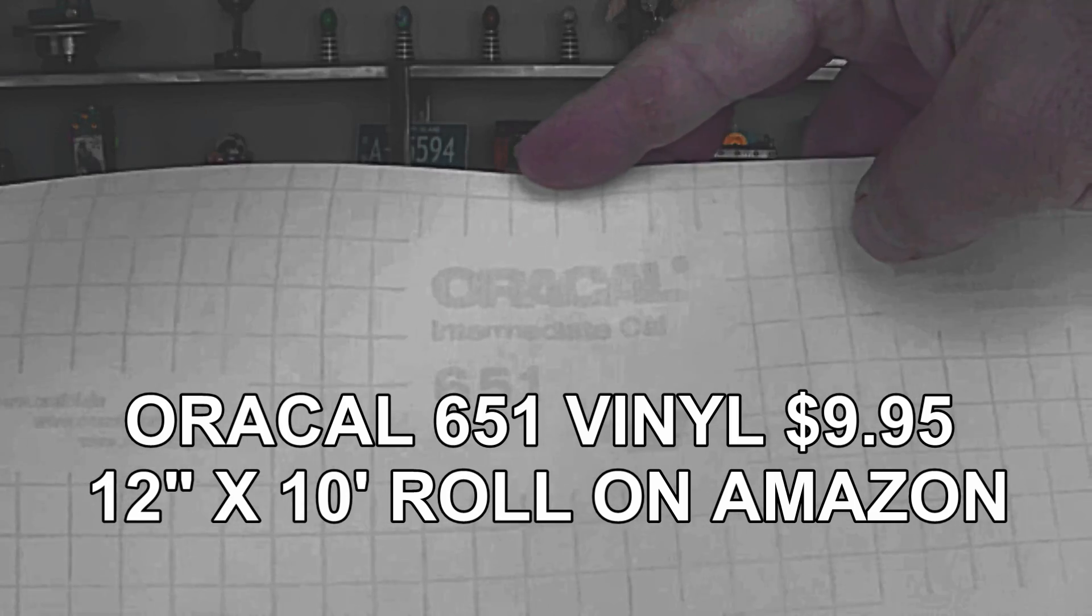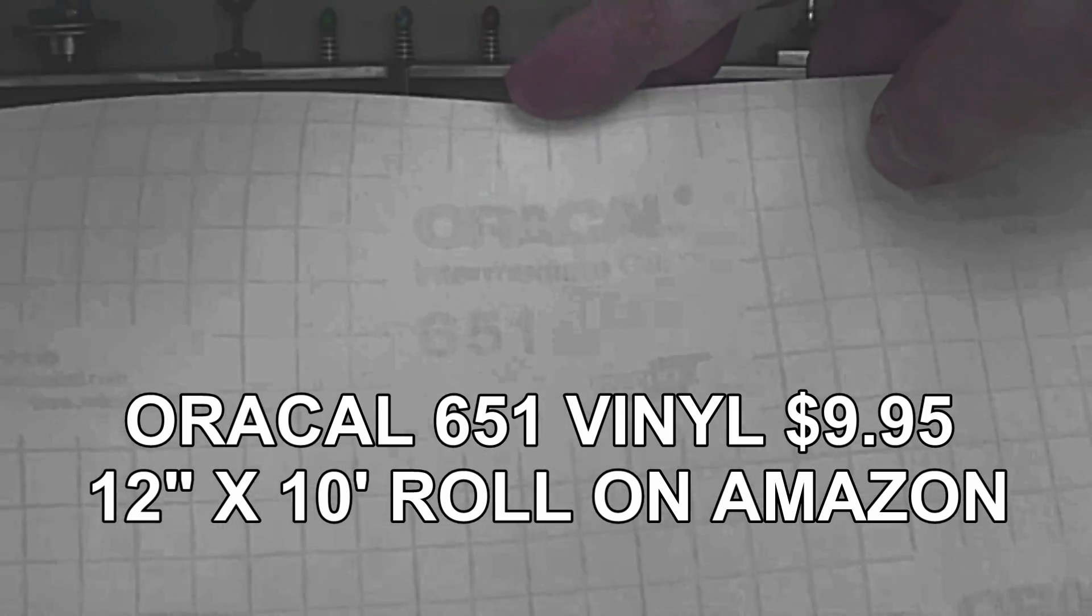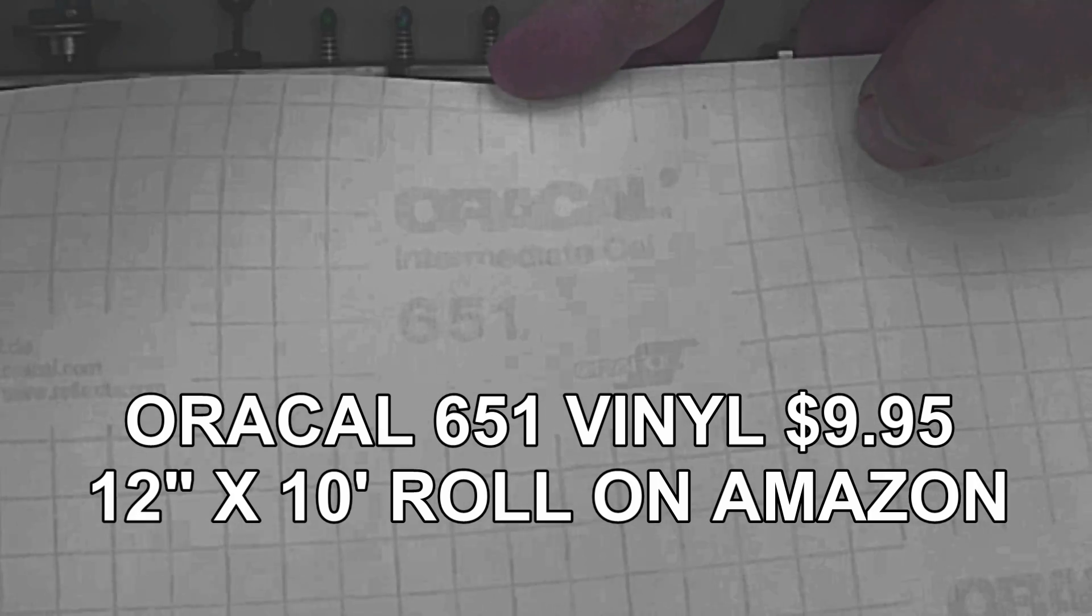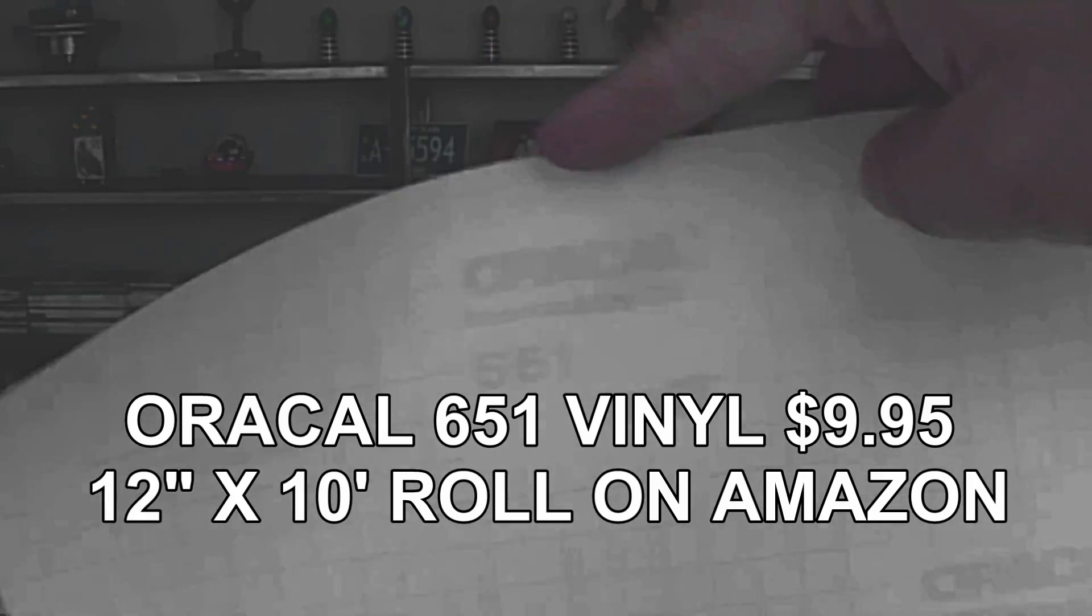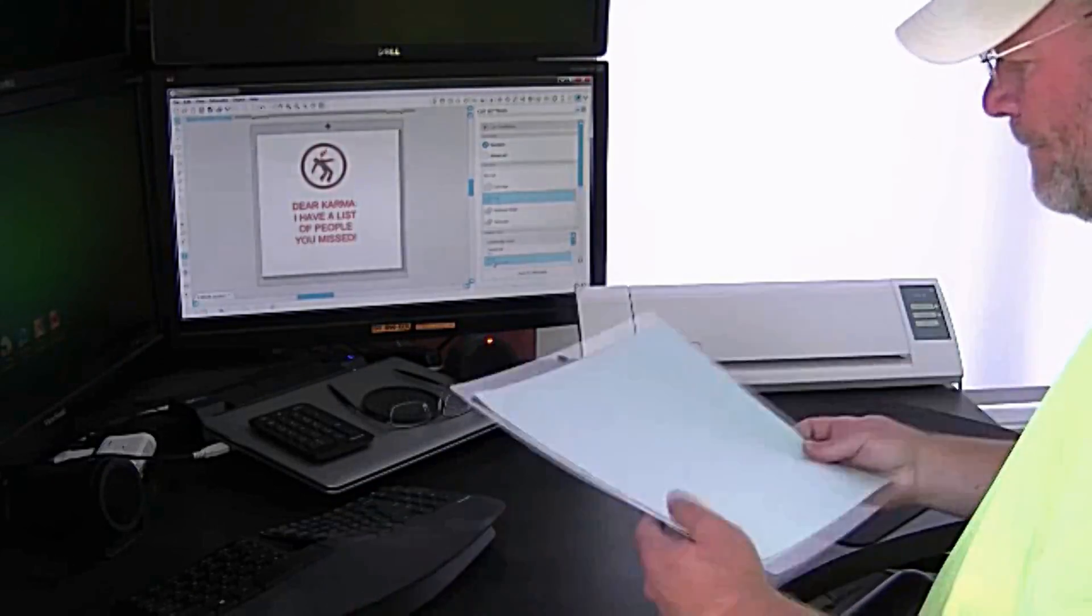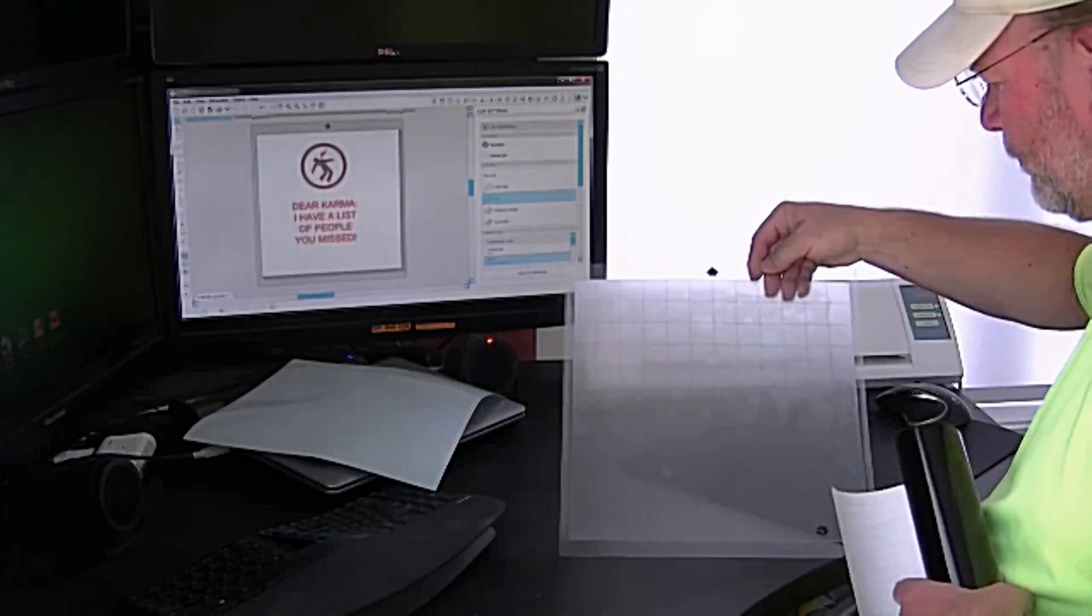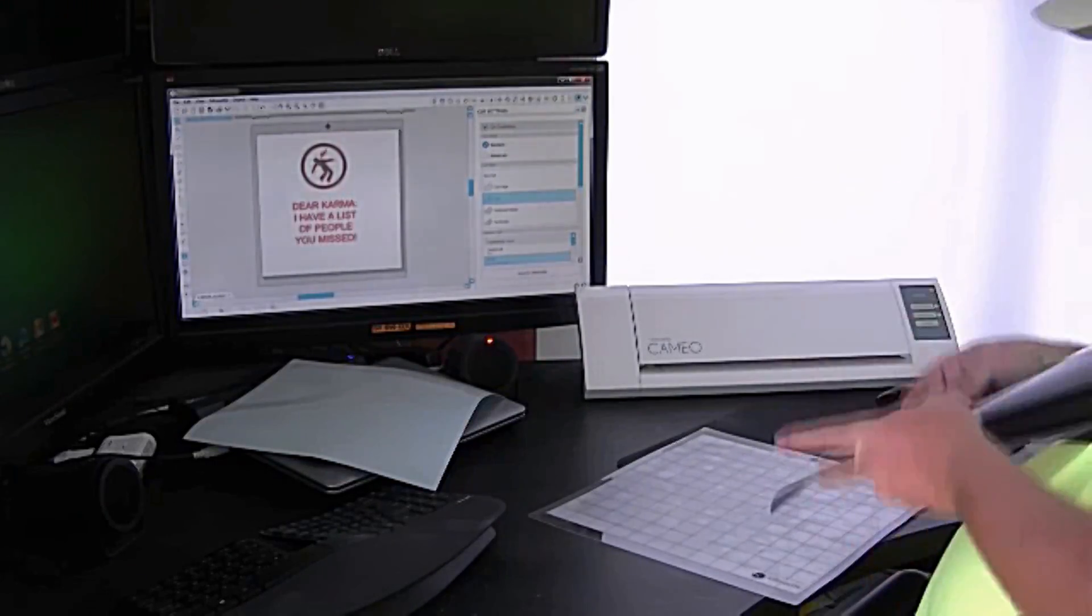You definitely want to use Oracle 651 vinyl. It's the only thing I've found that actually holds up and is strong enough to withstand the salt and vinegar solution and the electricity. So here's the cutting mat for the Silhouette and here's a 12 by 12 inch piece of vinyl, black.